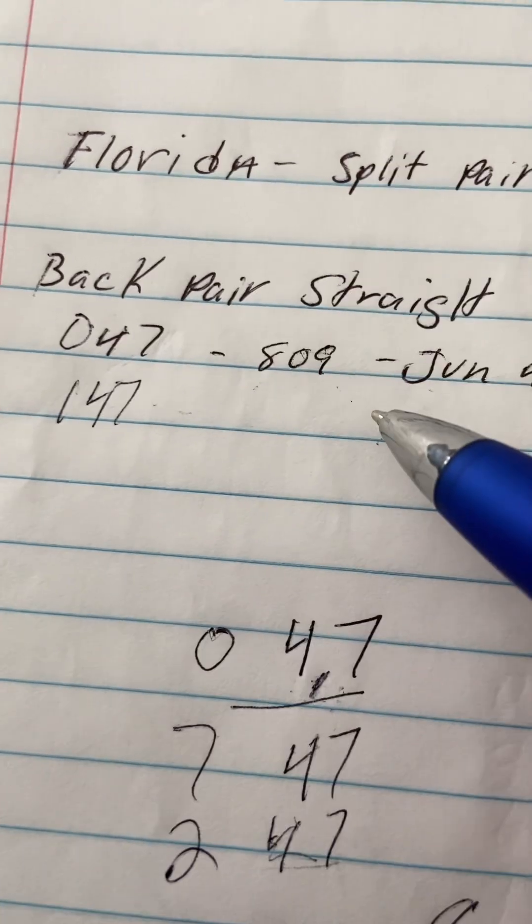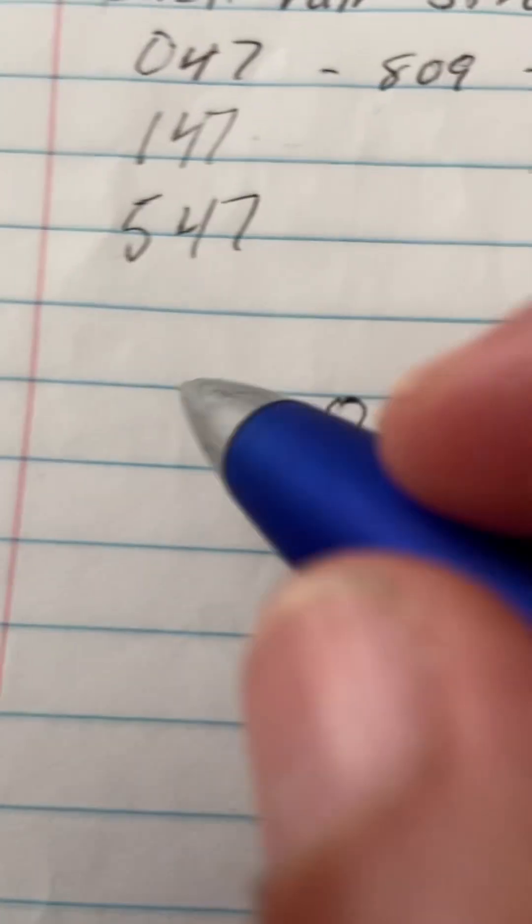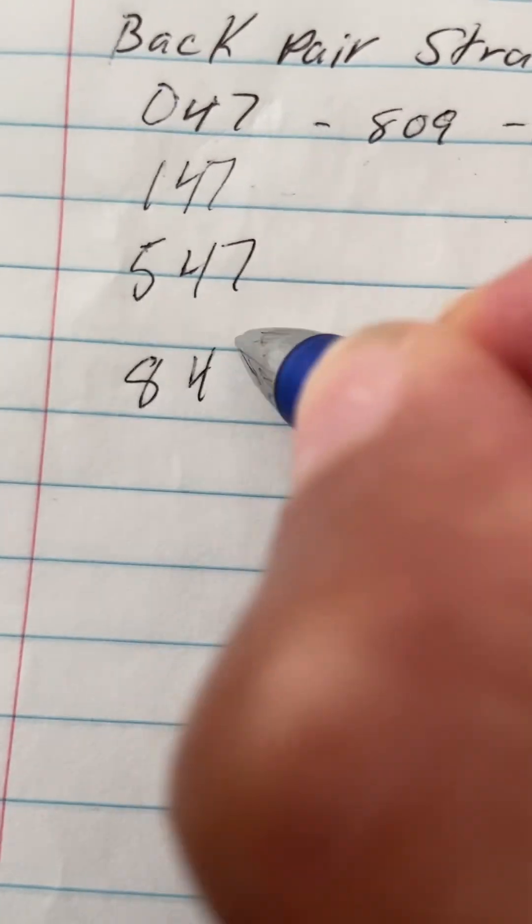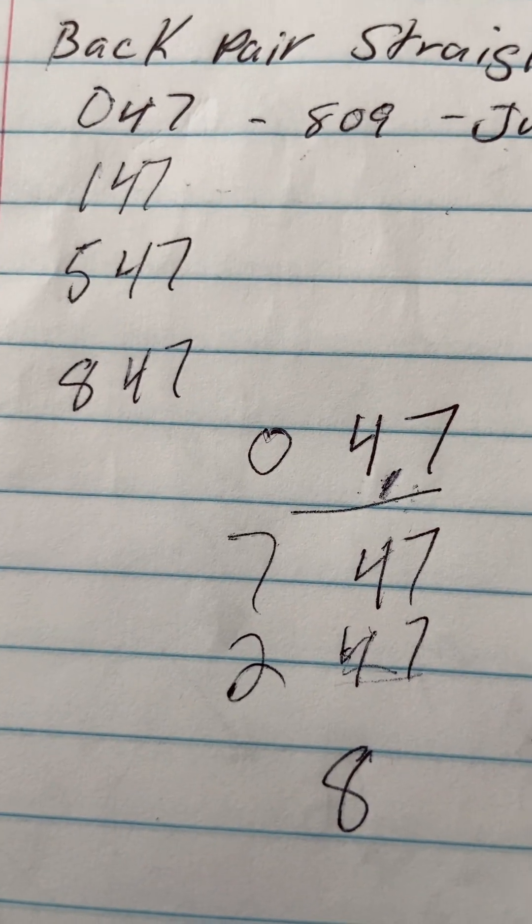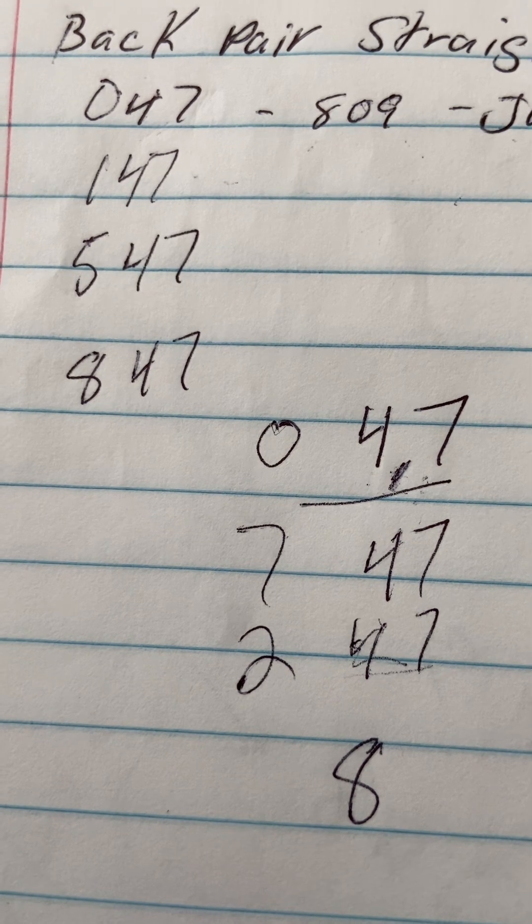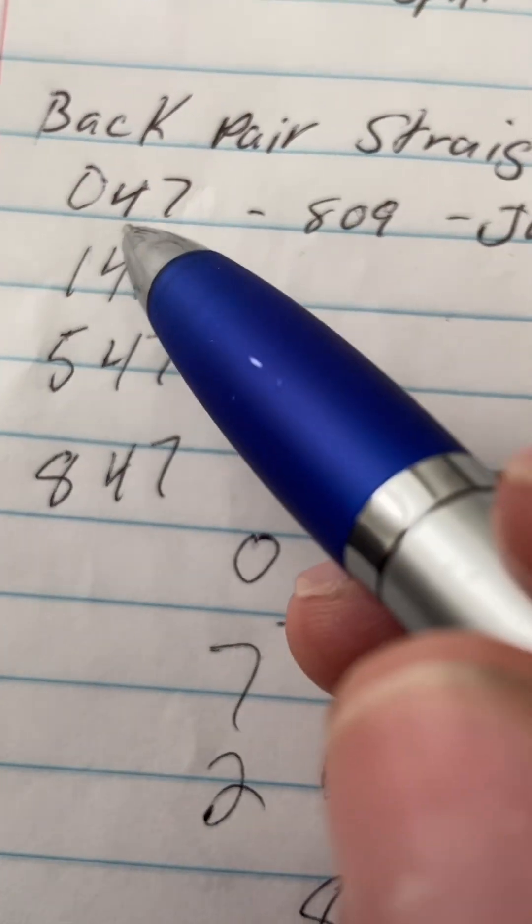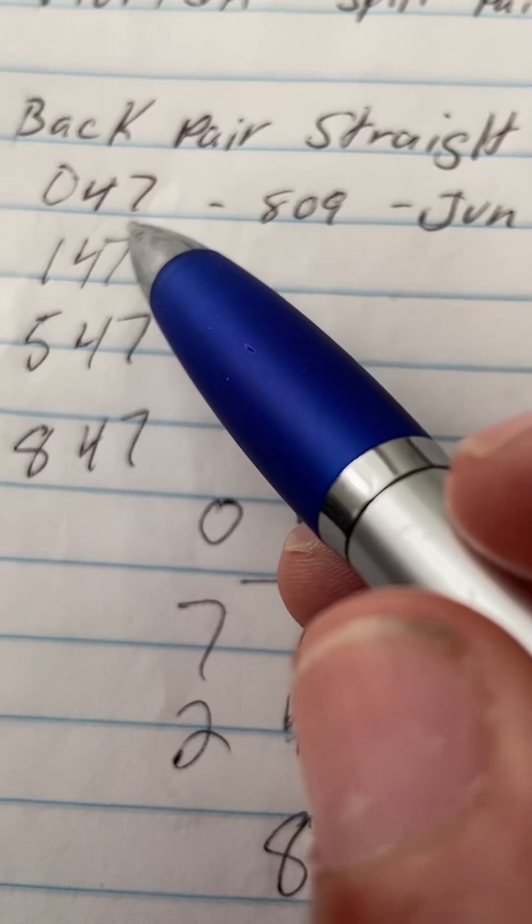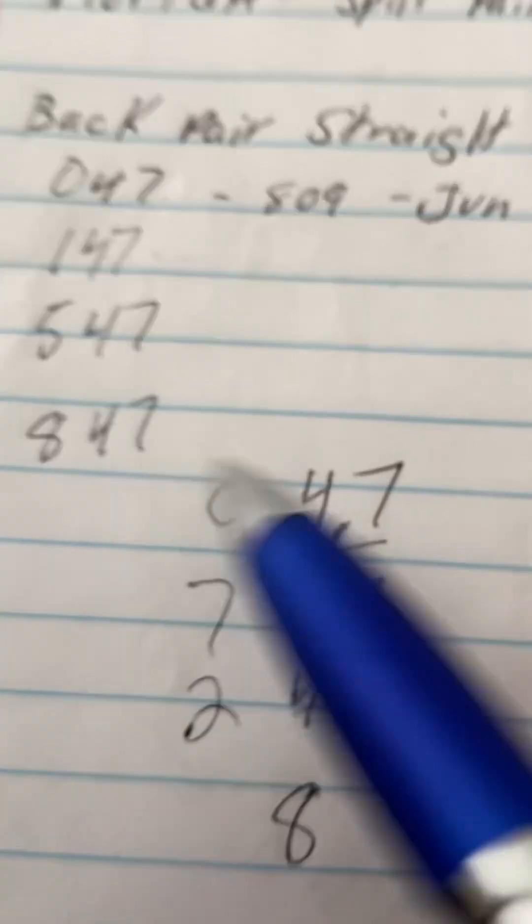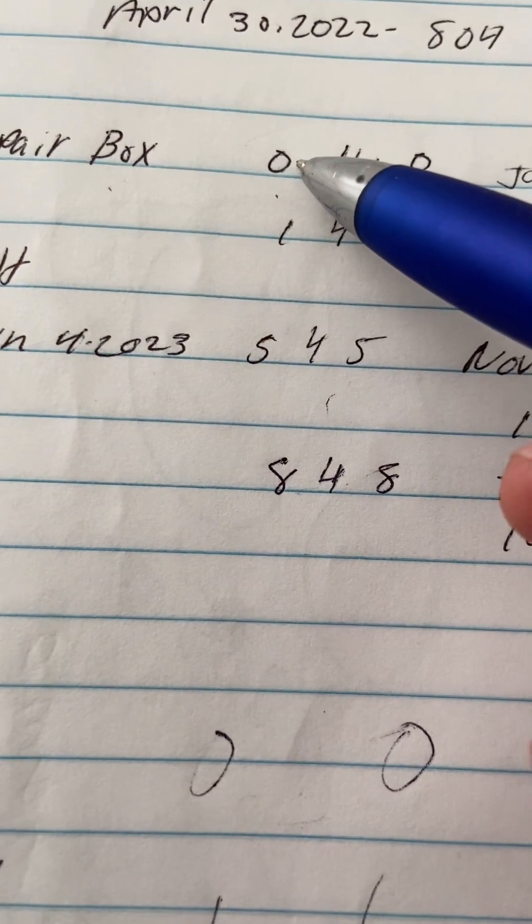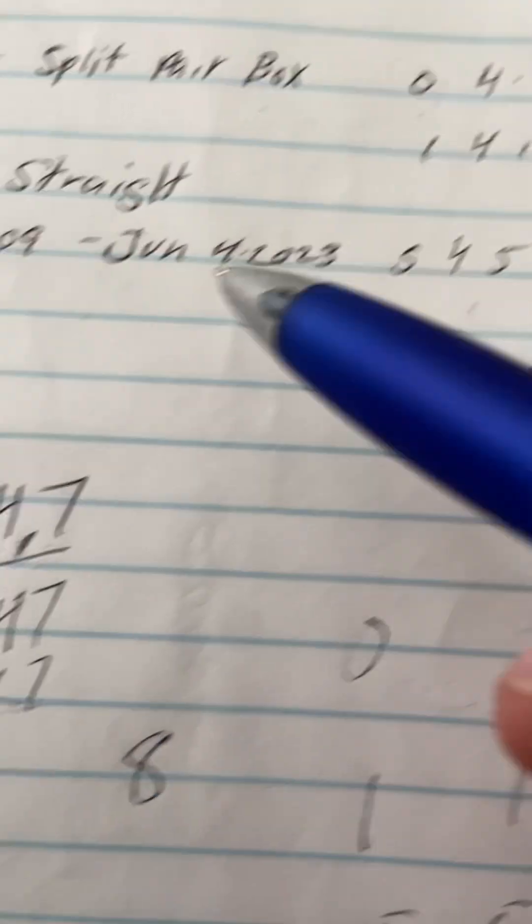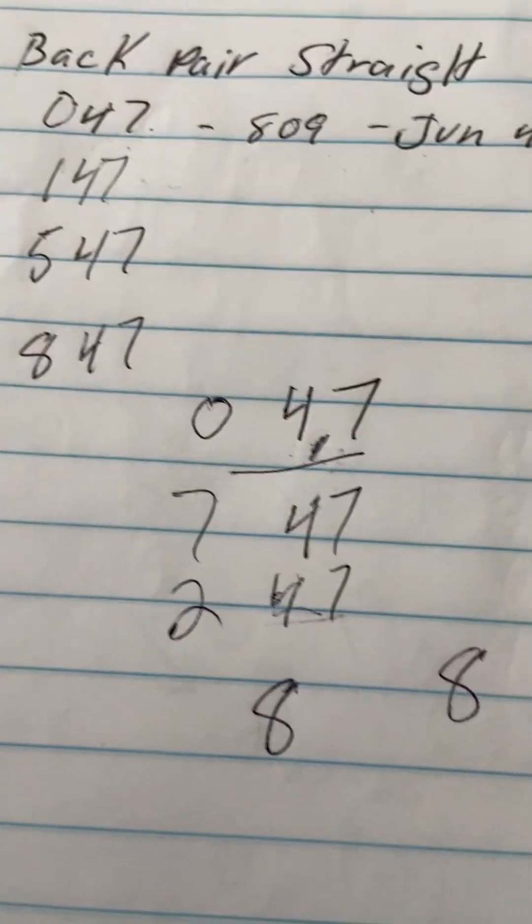So back pair 47 is overdue, you can go 5-4-7. Split pair 8-4, you can go 8-4-7. You see what I've done there? If they're saying your back pair straight is overdue 47, that's a 47 in the back. We can use one of your first numbers in your split pair, so just add with that. That's all you're doing, guys.